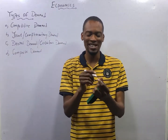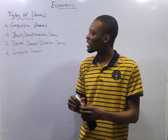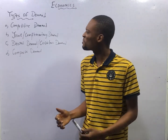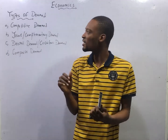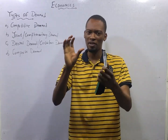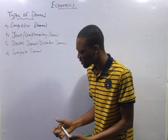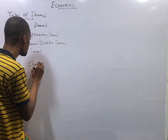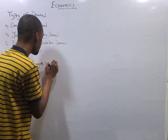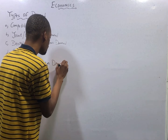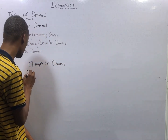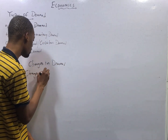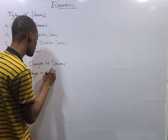This is episode number 20 of the 120 Days to JAMB Economics with Flash Isaac. In this episode, we shall be taking a look at the types of demand. In the previous episode, we took a look at changes in demand and changes in quantity demanded.